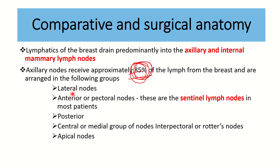Among these, the anterior lymph node — also called the pectoral lymph node — is very important because it acts as the sentinel lymph node. Any tumor or cancer spreading from the breast first goes to the anterior or pectoral lymph node. The first lymph node that drains from an organ is called the sentinel lymph node.